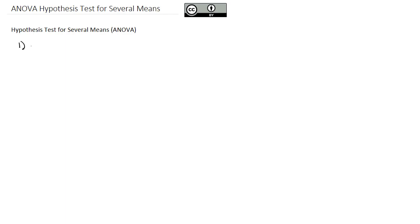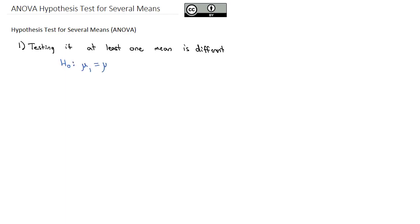So the hypothesis test for several means — the ANOVA — is really testing if at least one mean is different than the rest of the means. In other words, our null hypothesis is going to be that the first mean equals the second mean, which equals the third mean, which equals the fourth mean, and however many means we're comparing — it might be 3, 4, 5, 12, or 20.